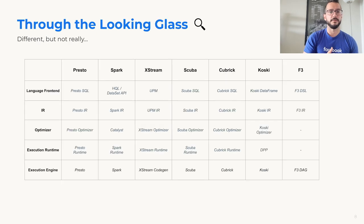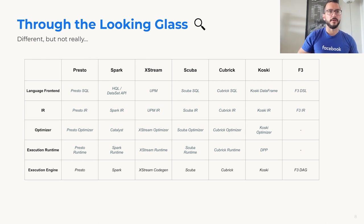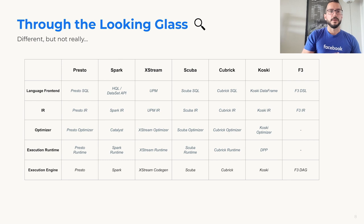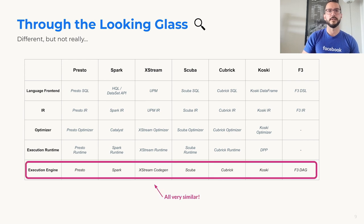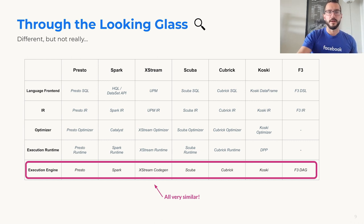The good news is that if you look closely at those engines, they're usually composed of the same set of layers. All those engines have some sort of language front-end — which in some cases takes a SQL string, or provides a dataframe API, or a DSL — that generates a logical plan or IR that goes through an optimizer and generates a physical plan, which gets passed to some sort of execution runtime that uses an execution engine to actually execute those operations. Particularly if you look at the execution engines, they're all very similar. So Velox is an effort trying to unify all those different code bases into a single library that can be reused and optimized by all those different engines.